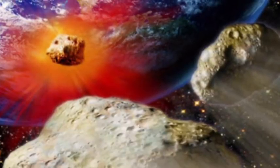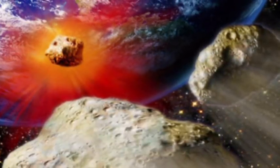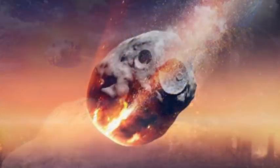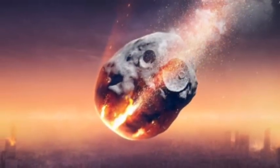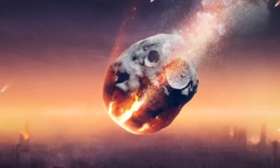PHAs are asteroids no smaller than 459 feet (140 m) which approach the planet within 0.05 astronomical units, or about 4.65 million miles (7.5 million km).